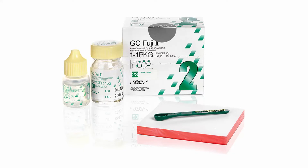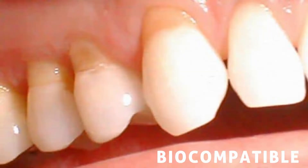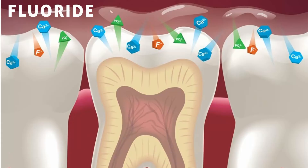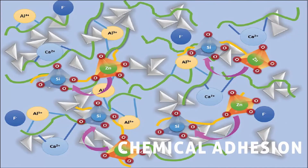Glass ionomer cement is a god-sent material to the dentist. If you have never used GIC in your practice, then probably you are not a dentist. It is a very biocompatible restorative material. It has the property of fluoride release, thus protecting the tooth from secondary caries. It also has the property of chemical adhesion to the tooth structure.